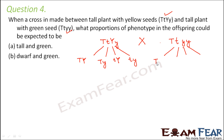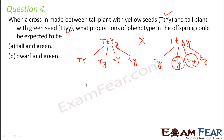Here we can see that the second parent actually has only two unique types of gametes: capital T small y and small t small y. So we write the four gametes of the first parent on the topmost row, and the two unique gametes of the second parent on the leftmost column of the Punnett square.